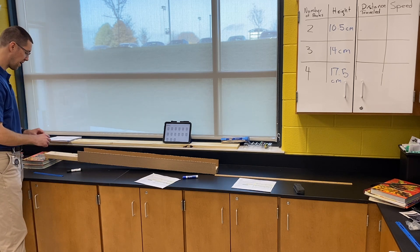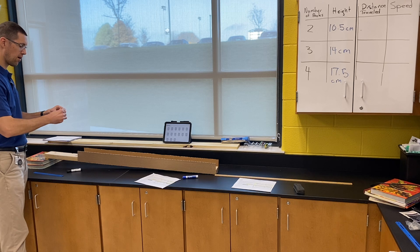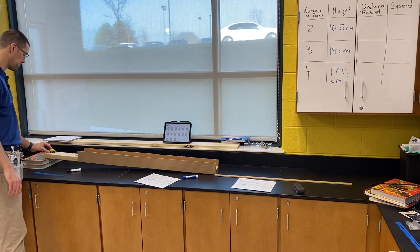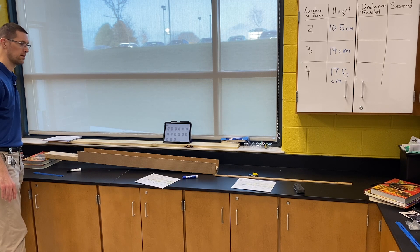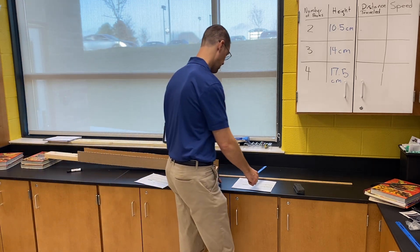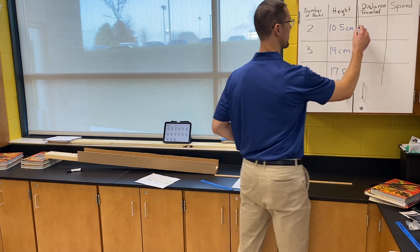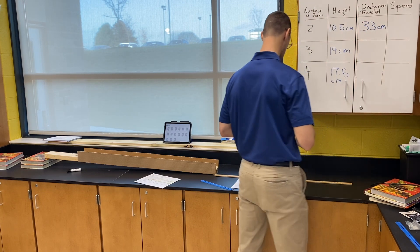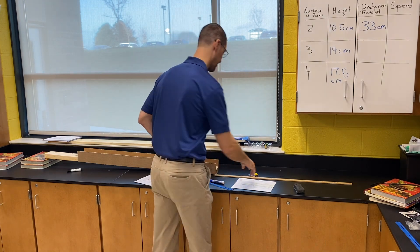We'll start with two books with the clay on top of the car — shape it a little bit. That one went to about 33 and a half centimeters. So that's the distance traveled for two books. You can already start comparing: how does this one do compared to the unweighted one we just did?